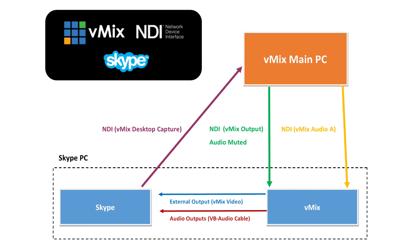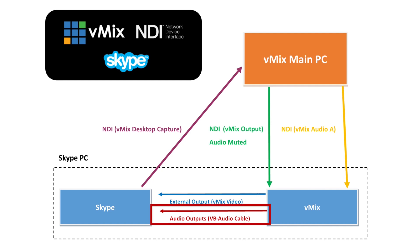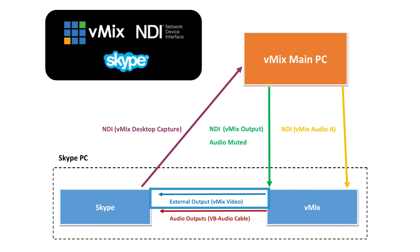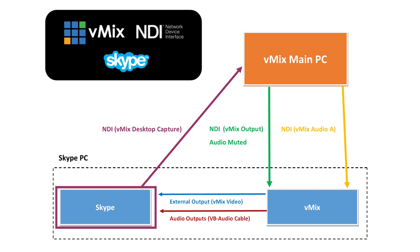Then install VB Audio Cable or Virtual Audio Cable — software that allows you to send audio between applications on the same PC. In the vMix settings on the Skype PC, go to Audio Outputs and make sure the main output is being sent to the VB Audio Cable. Then turn on External Output in vMix — this creates a virtual webcam device on that PC that Skype will detect, containing the vMix output from the main PC. Finally, go into Skype settings and select VB Audio Cable as the audio source and vMix Video as the video source.